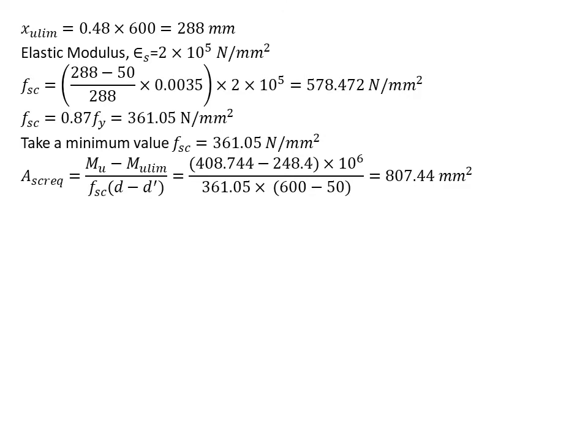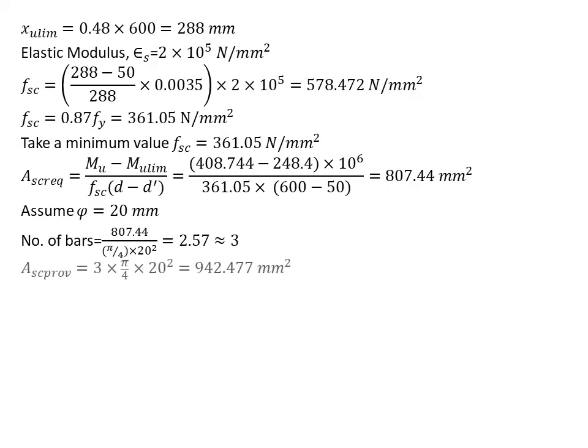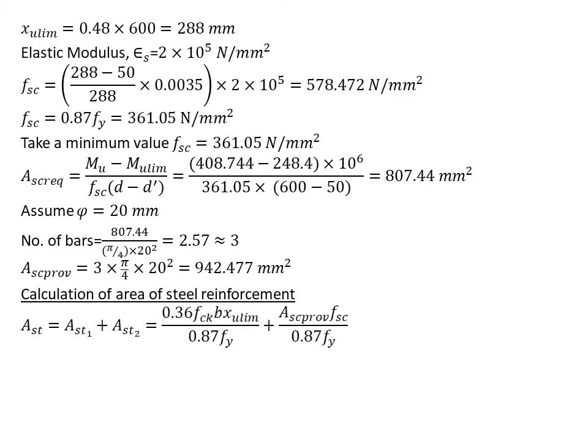Now we find Asc required. We substitute fsc's value and we get 807.44 mm². Then we assume diameter equals 20 mm, we find the number of bars equals 3, then we find Asc provided. Obviously for tensile reinforcement we found provided area, it's the same thing for compression reinforcement as well. Next we calculate the area of steel reinforcement as total.